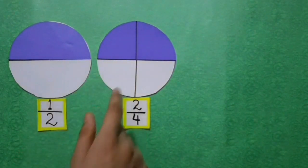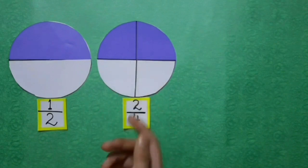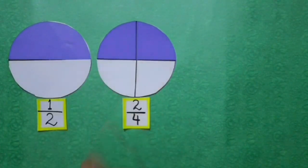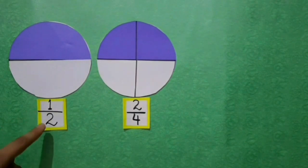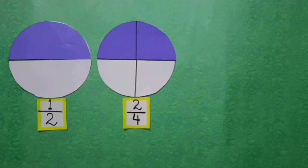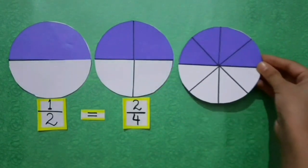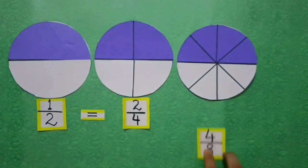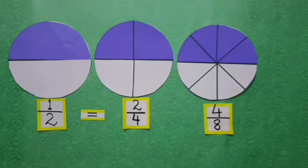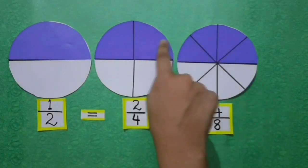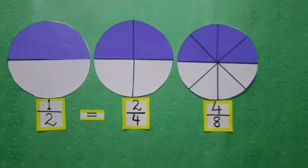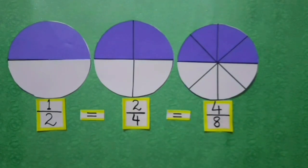Students, you can see both circles are representing the same colored parts. This shows that the fractions 1 upon 2 and 2 upon 4 are equivalent fractions. Now I have divided this circle into eight equal parts. Then what is the fraction of the colored part? 4 upon 8. You can see this circle also represents the same colored portion as the other two circles. This shows that 1 upon 2 is equal to 2 upon 4 and 2 upon 4 is equal to 4 upon 8. So these are all equivalent fractions.